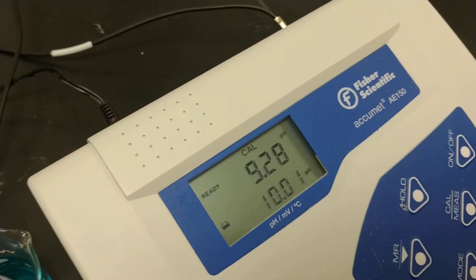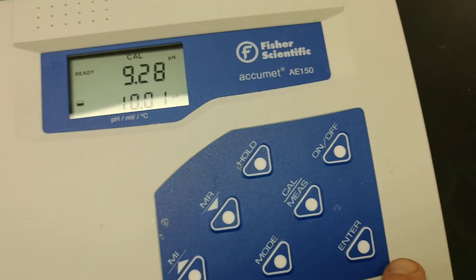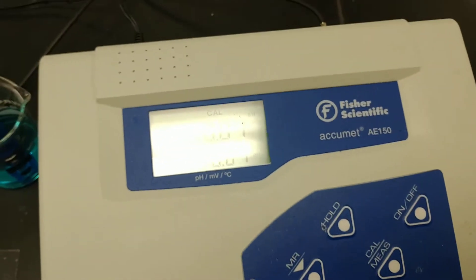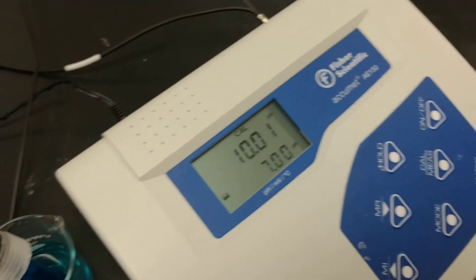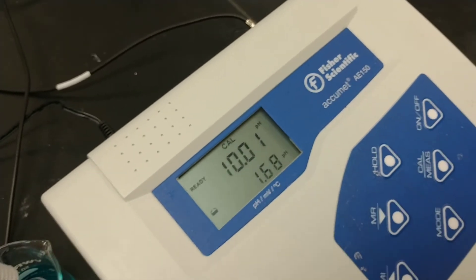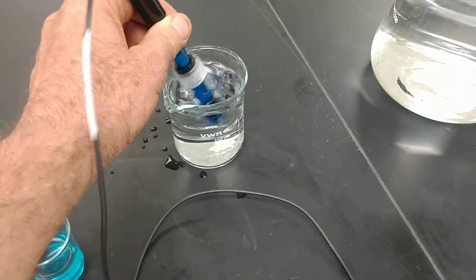Notice it's still in the calibration mode. It said ready. So what do I do? Press enter, flashes to say we're going to be storing that number. And now it's still in the calibration mode because this particular meter just won't let it go until it finds a pH of 7.